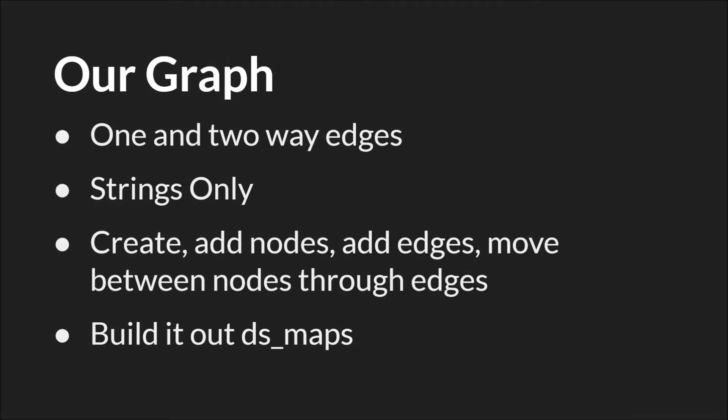Our graph is going to be a collection of nodes with both one- and two-way edges, so edges that go only one direction and edges that go both directions between nodes. We're only going to use strings as data. The only functionality beyond create and destroy is the ability to add nodes and edges and move between them. We're going to build it out of DS maps — it's a map of maps, where the graph itself is a map and each node is also a map.